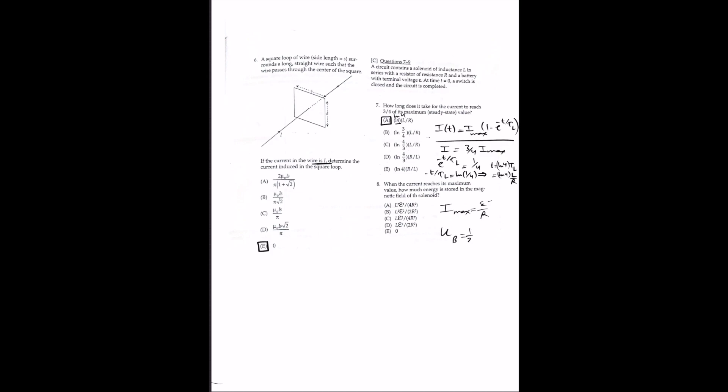For question 8, when the current reaches its maximum value, the maximum current is E/R. The magnetic energy stored in the inductor is U_B = (1/2)·L·I² = (1/2)·L·(E/R)² = L·E²/(2R²). The answer is D.